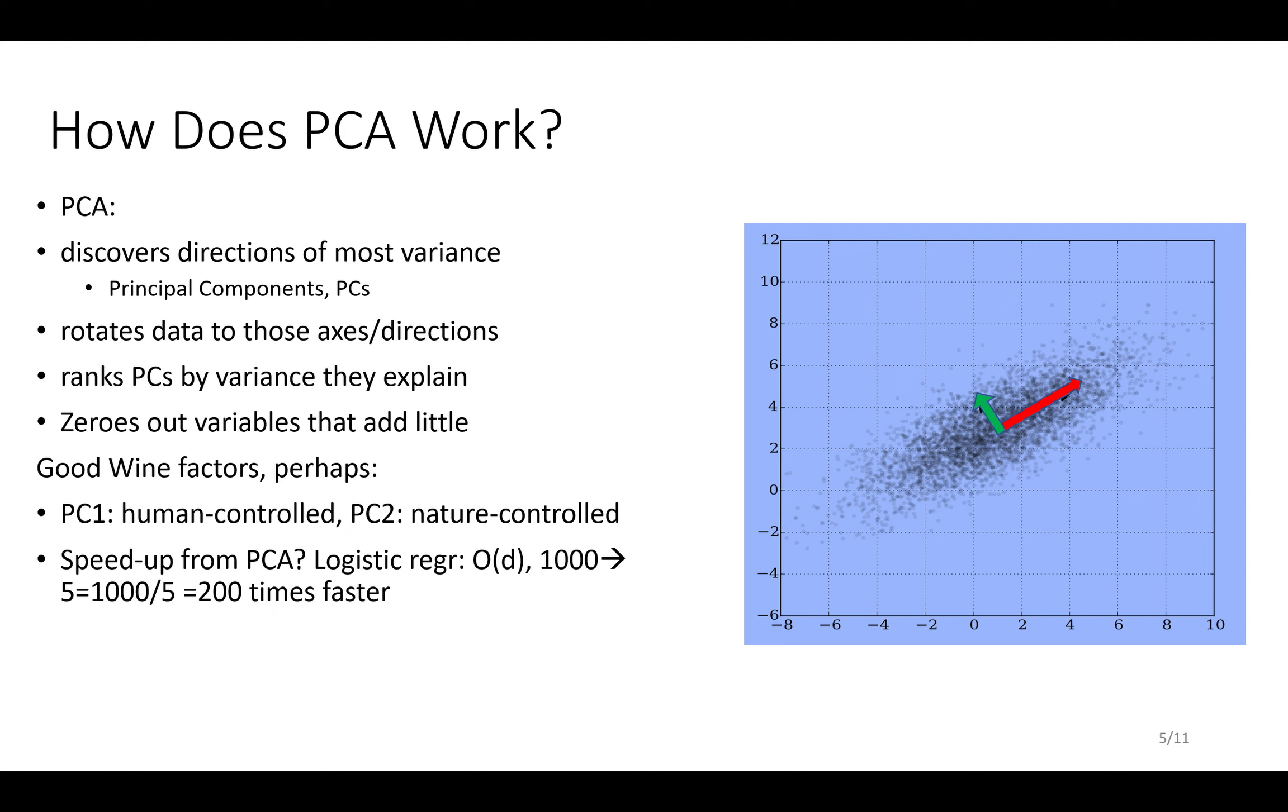PCA ranks these. It rotates the data to different axes instead of these ones which don't make so much sense in the data space, and then ranks them and zeros out the other variables. You can just forget about them.